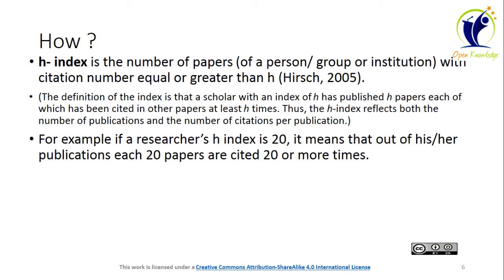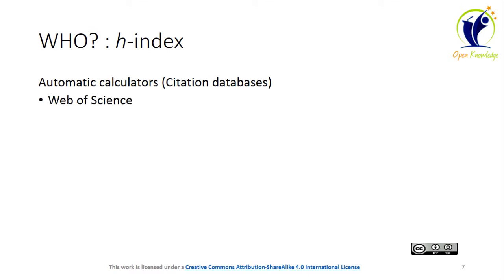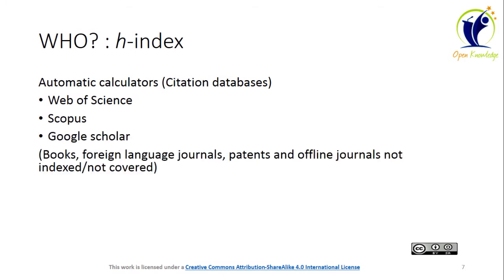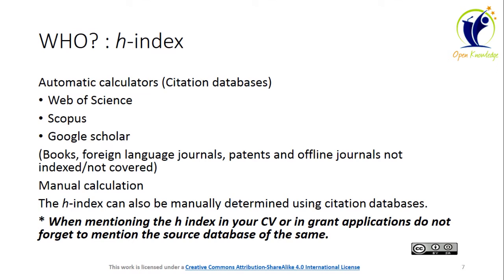Who calculates the H-Index? Automatic calculator citation databases such as Web of Science, Scopus, and Google Scholar. Please remember: books, foreign language journals, patents, and offline journals not indexed are not covered in these databases. H-Index can also be manually determined using citation databases. It is to be noted that when mentioning the H-Index in your CV or in a grant application, do not forget to mention the source database.